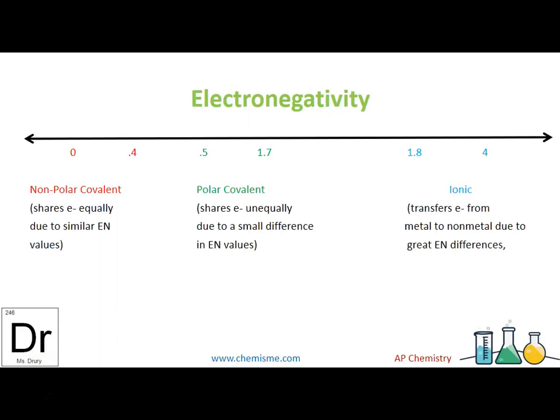So in nonpolar covalent bonds, they're going to be sharing electrons because covalent means to share valence, equally, because there's no one electronegativity that's higher than the other. In polar covalent, they're still sharing, because that's what covalent means, share valence. But in a polar way, in the sense that one of the atoms is pulling electrons closer to it more of the time.